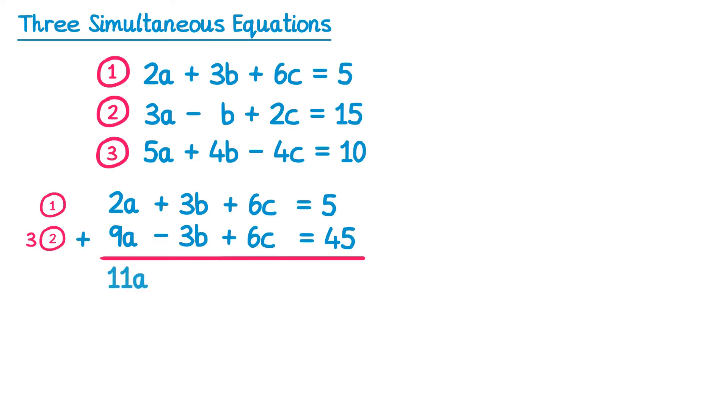I'm now going to add these equations together. So 2a add 9a is 11a, 3b add negative 3b gives me 0, 6c add 6c is 12c, and 5 add 45 is 50. So there's my first equation.